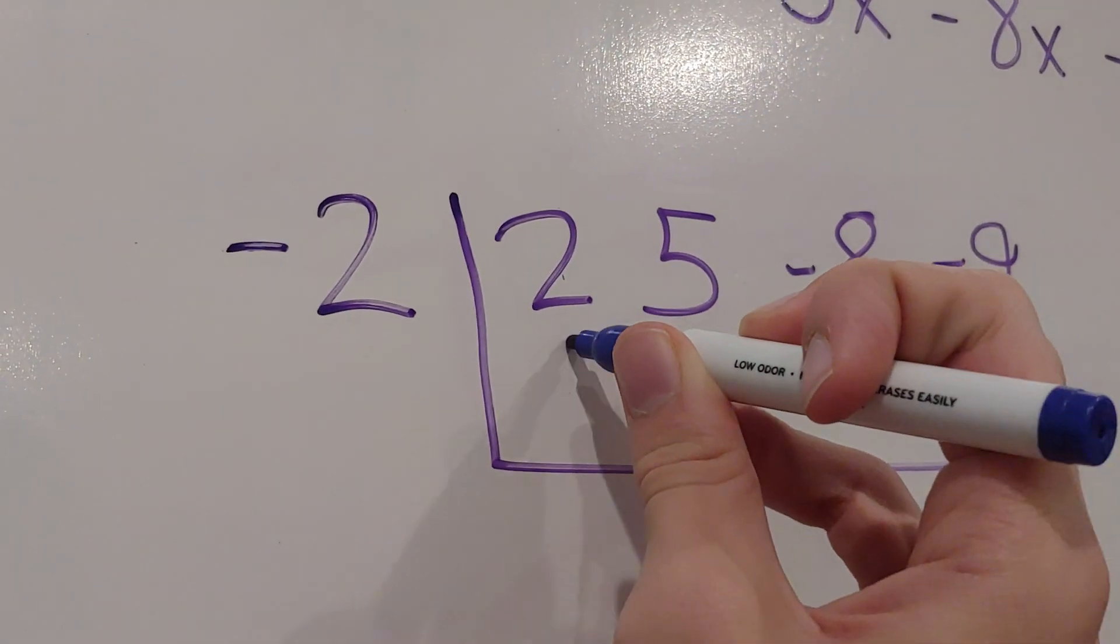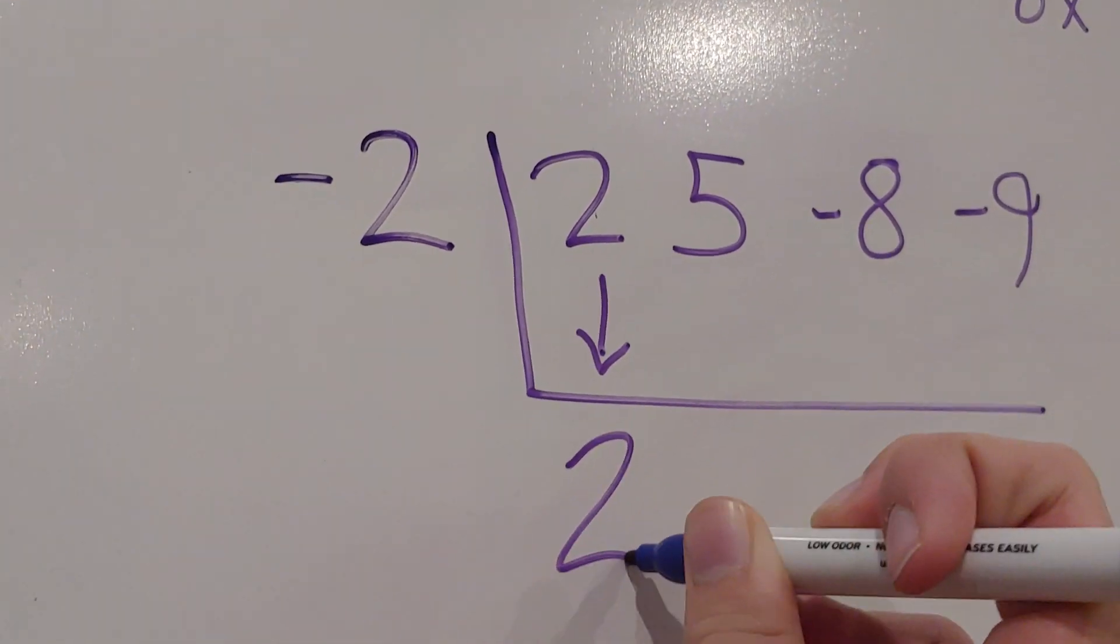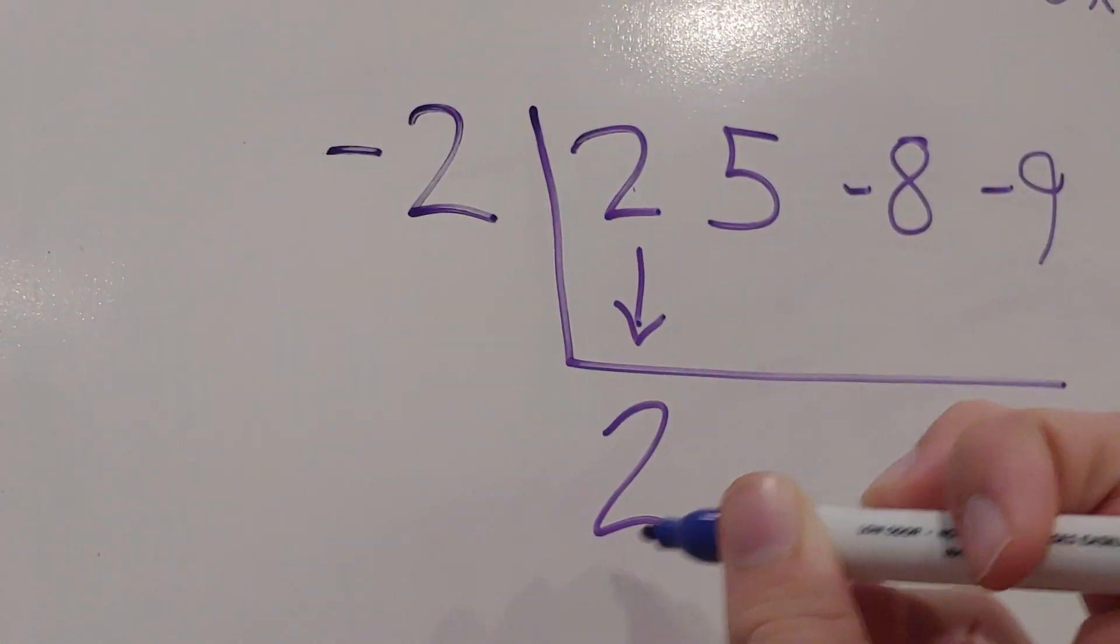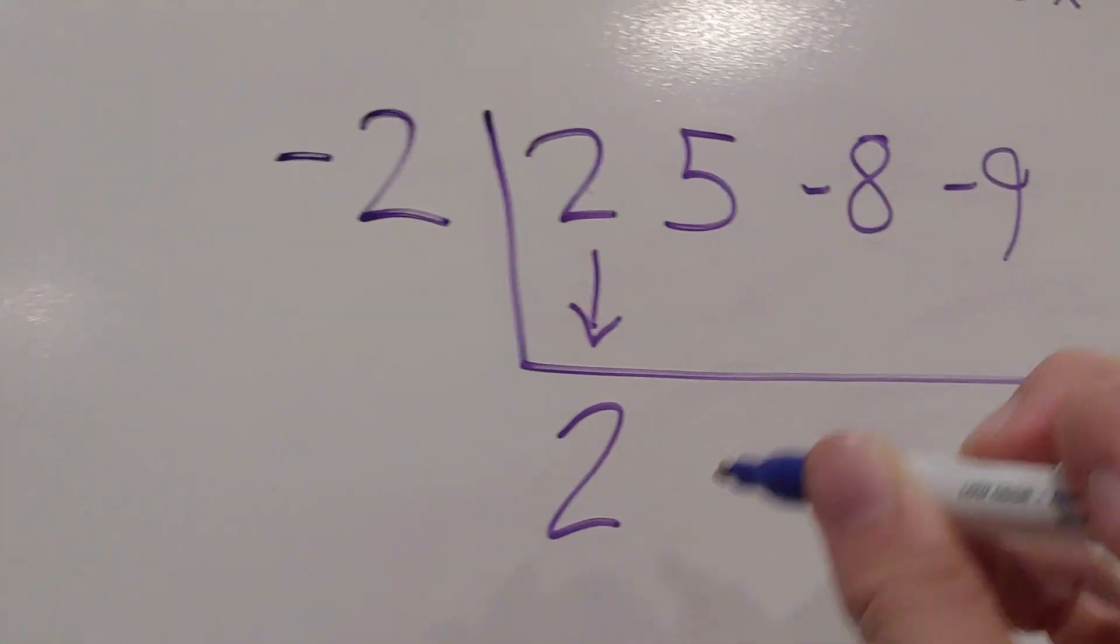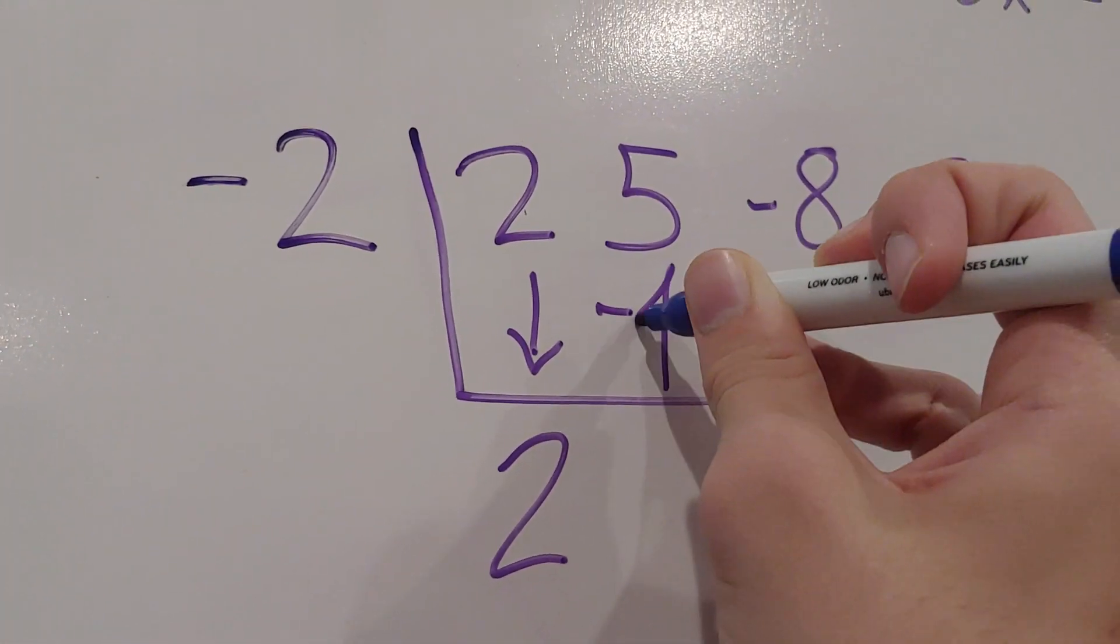And then we bring down this number, positive 2. Then we multiply these numbers together. Negative 2 times 2 equals negative 4.